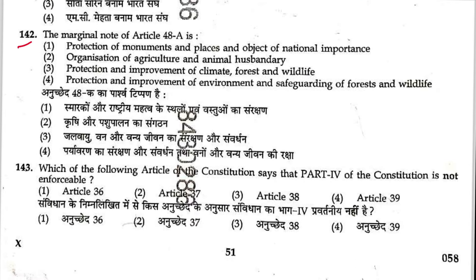Question 142: The marginal note of Article 48A — protection of environment and safeguarding of forests and wildlife is written under Article 48A. The marginal note of Article 49 is protection of monuments, places and objects. Article 48 is on agriculture and animal husbandry. Answer is 4.